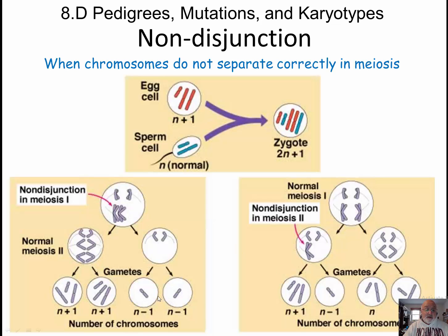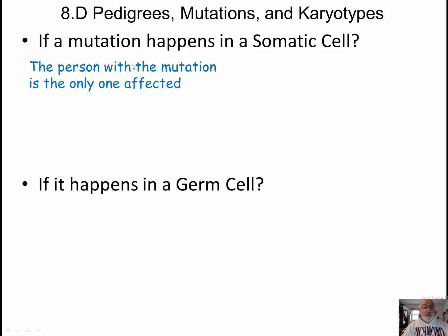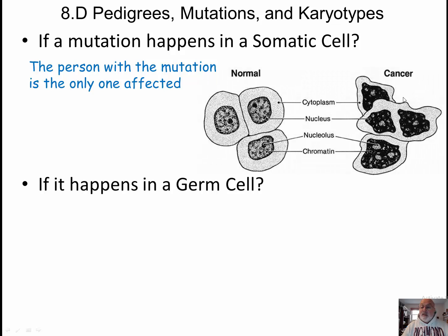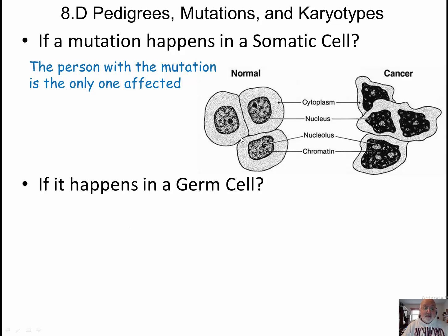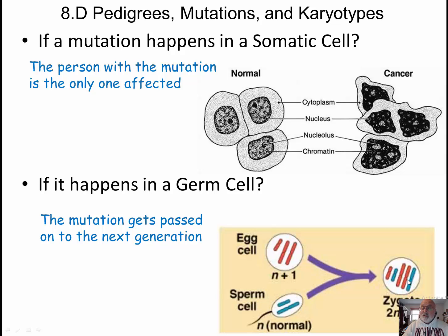The egg will get fertilized, and the question is, if you only had one sperm going in, would it be able to find the egg? Now, how do we tell mutations when we look at karyotypes? Whether the mutation happens in a somatic cell — a normal body cell — means that the person with the mutation is the only one affected. This is when a normal cell becomes like cancer. You can't really pass on cancer to your kids, but you can pass on a susceptibility. A germ cell mutation is one that gets passed on from one generation to another, and it happens in the germ cell — this mutation would go on to the zygote.